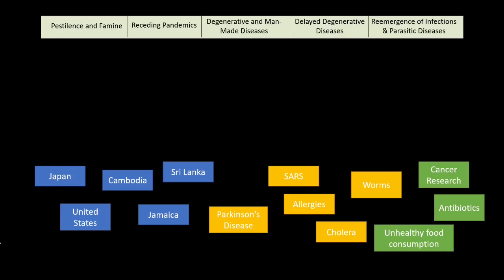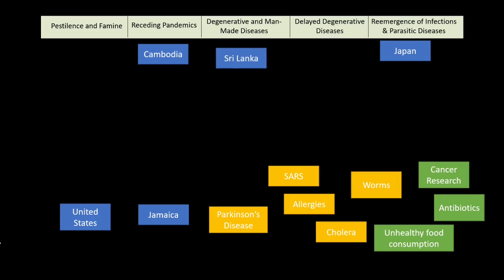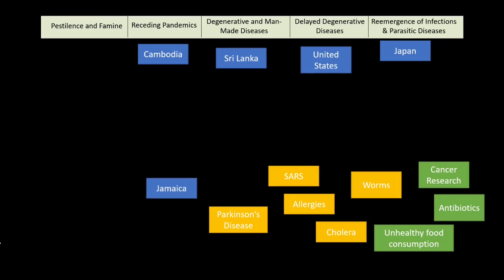Let's pull up our five stages again — you do need to know those names. Here are some countries and examples to connect to each stage. Japan is in stage five of the DTM, so it's going to be in stage five of the ETM: reemergence of infectious and parasitic diseases. Cambodia is in stage two of the DTM, so stage two: receding pandemics. The United States is in stage four. Sri Lanka is in stage three of the DTM, so stage three of the ETM. Jamaica is the same — stage three. You can see a pattern: Japan and the United States are way more developed than Cambodia and Jamaica.